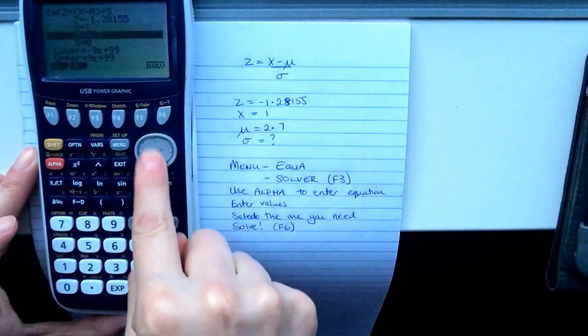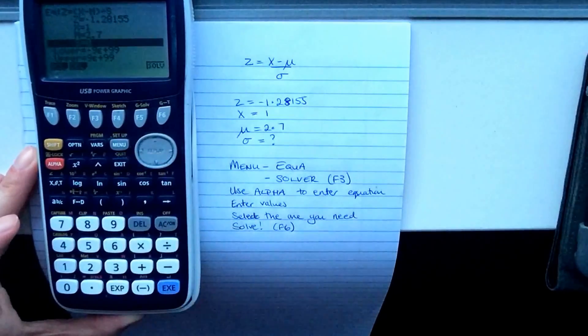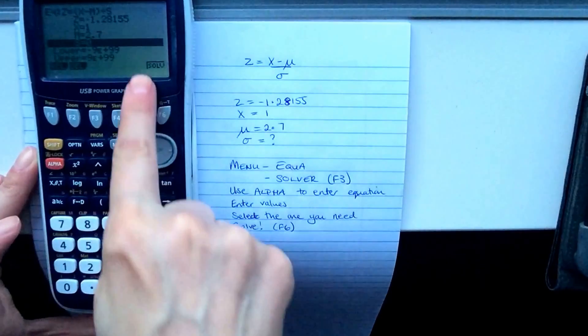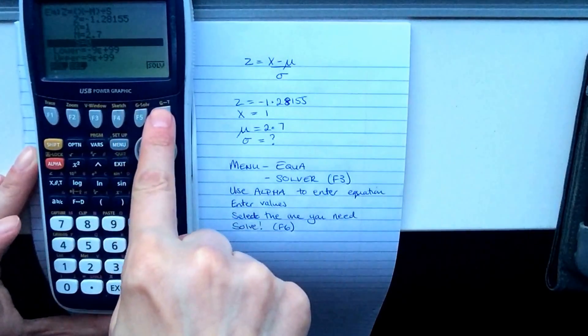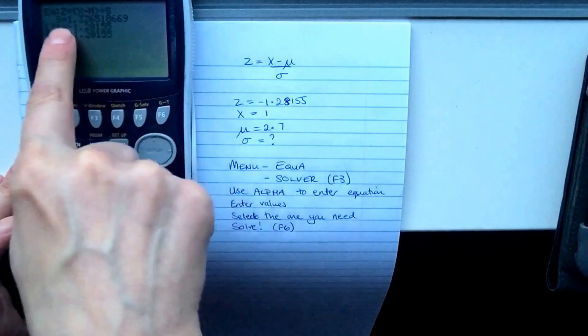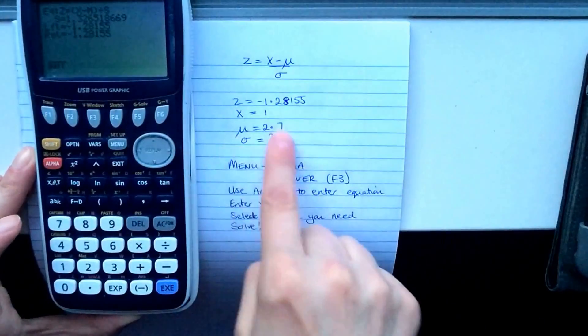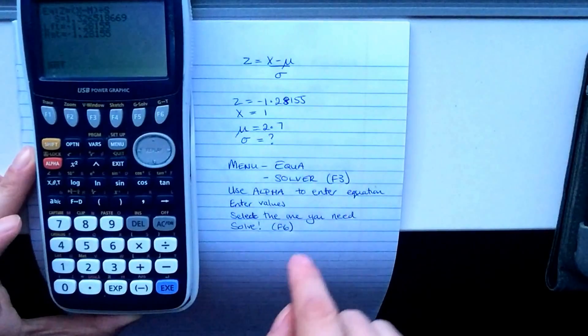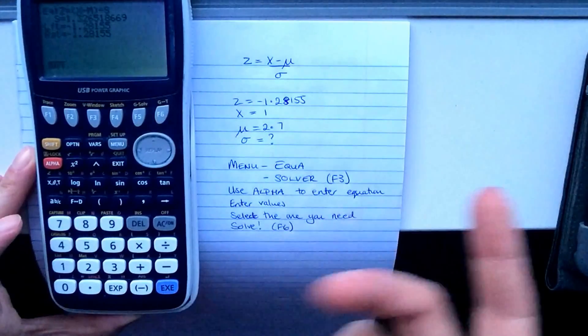Now when you want to solve it, you can use these up and downs here. Select the one that you want to work out, and when you're on that one, you press this button for solve, and it tells you just here, S is 1.3265, so sigma in this situation is going to be 1.33.